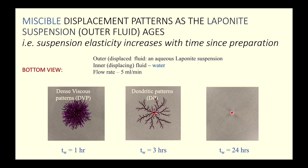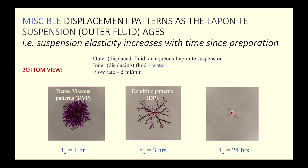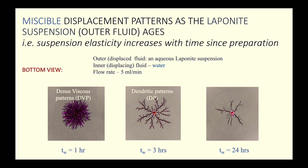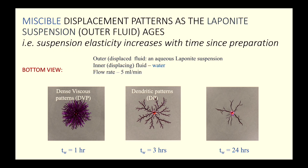These are called dendritic patterns — named for the predominance of side branch formation. At 24 hours, the clay is very elastic. Driving water through the highly aged suspension builds up elastic stresses that must be released very fast, resulting in crack patterns. A few primary branches are very narrow with perpendicular offshoots — very typical of crack patterns.